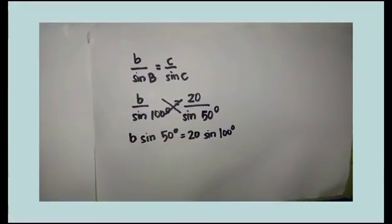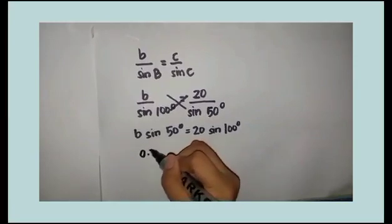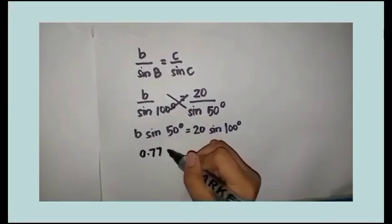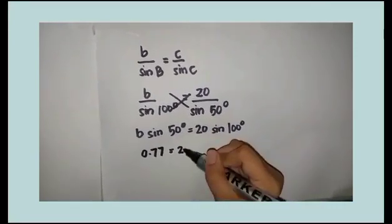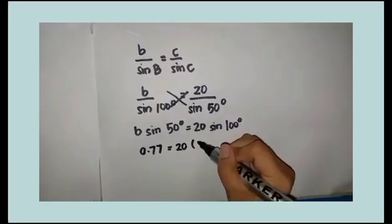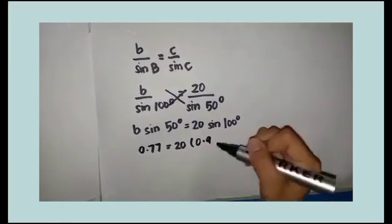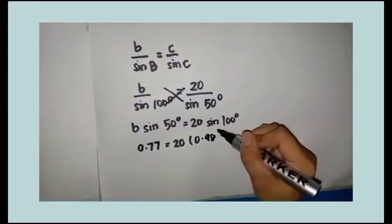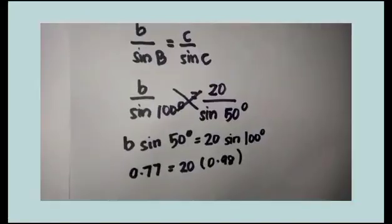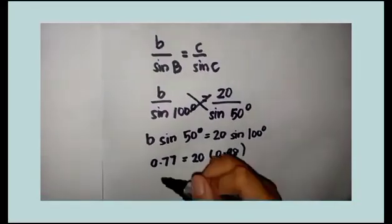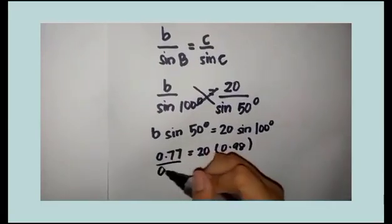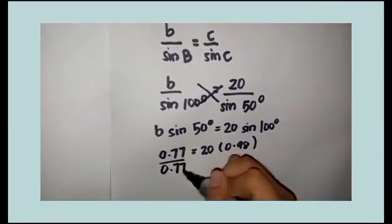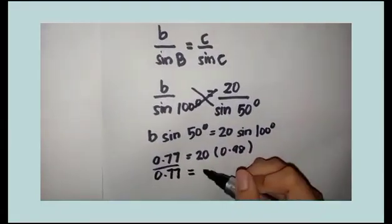After the cross multiply, we have to know what is the sine of 50 degrees and the sine of 100. The sine of 50 degrees is 0.77. Copy the 20 and the sine of 100 is 0.98. 0.77 is divided to itself, and the 20 times 0.98 is divided to 0.77 as well.